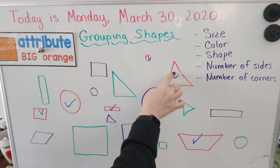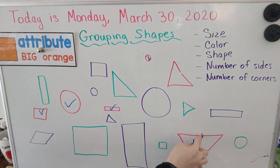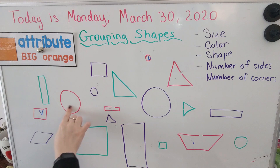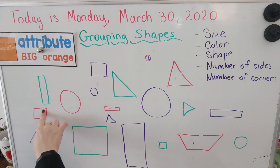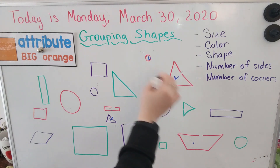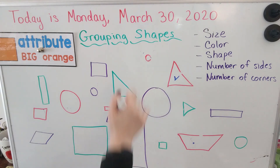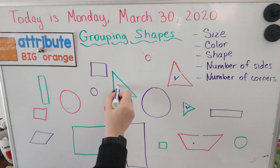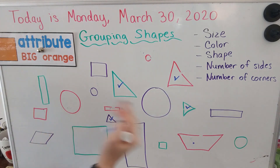Another way to group them is by what shape they are. So I can say I'm going to group all of the triangles together, all of the circles together, all of the squares together. This is me grouping all of the triangles in one spot.